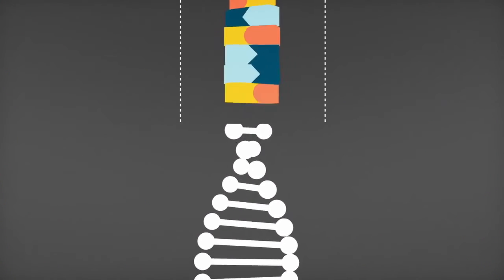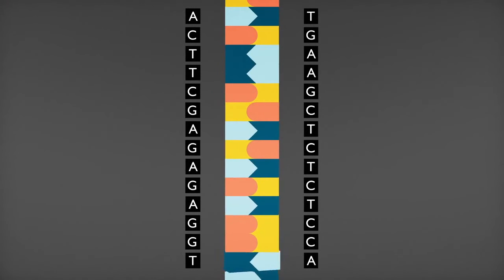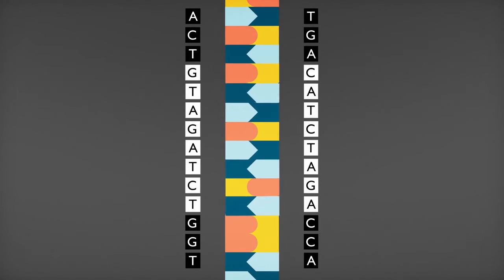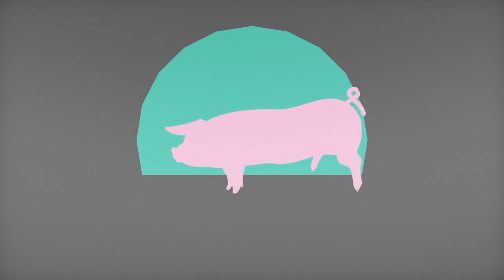We haven't just learned to read the instruction manual for life, we can rewrite it as well. People have been manipulating DNA since before we knew it existed, selectively breeding plants and animals to bring out desirable traits.